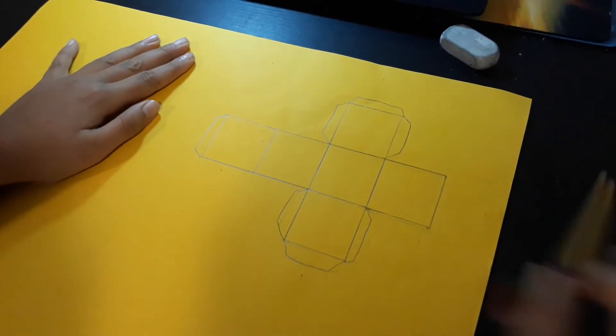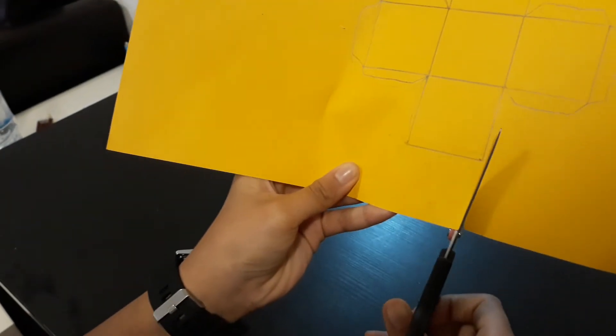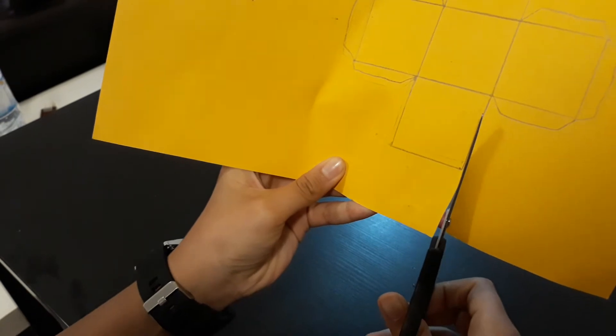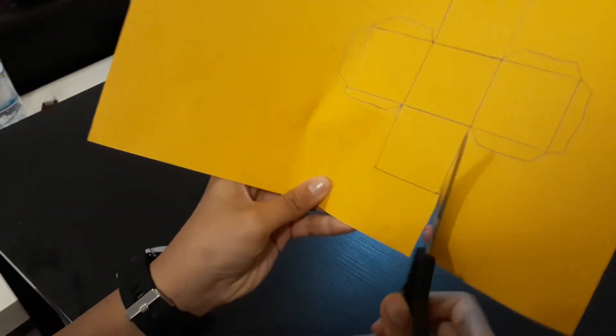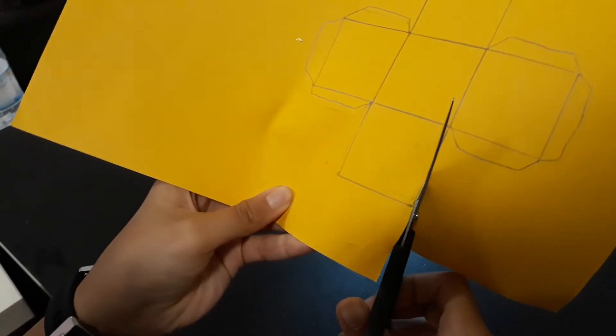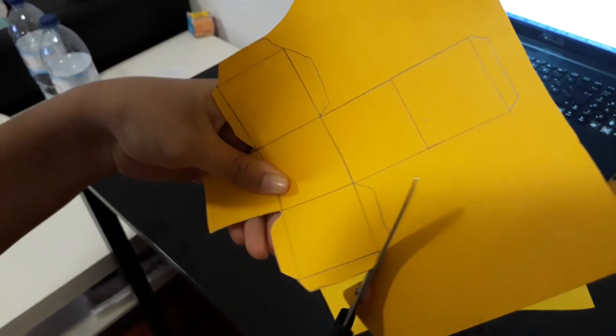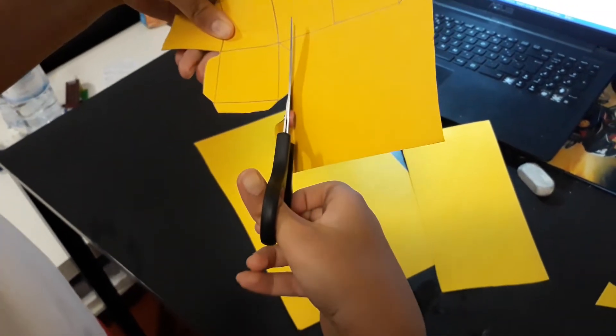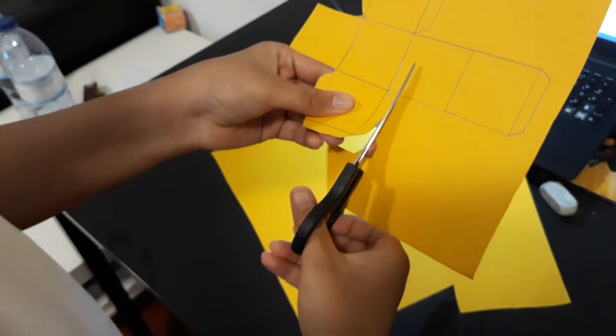So now we have to take our scissors and cut it. So now we cut the shape we made. As you can see, I'm cutting the shape we made.